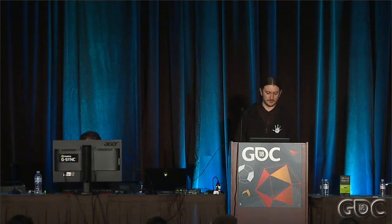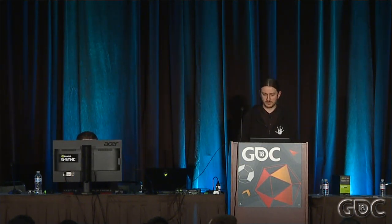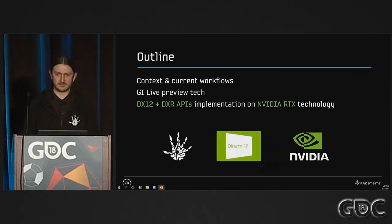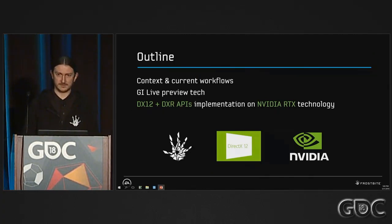I'm here to talk about real-time rendering for interactive global illumination workflows in Frostbite. In this talk, first I will talk a bit about the context and the current workflows we have, and then I will describe how we implemented the GI live preview technology in Frostbite using DirectX 12, DXR APIs, and NVIDIA RTX technology.